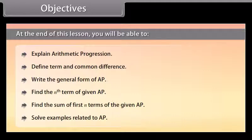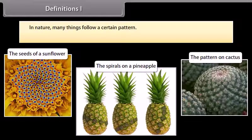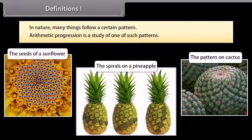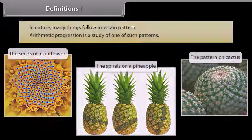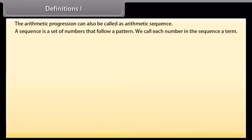In nature, many things follow a certain pattern, such as the seeds of a sunflower, the spirals on a pineapple, the pattern on a cactus, and so on. Arithmetic progression is the study of one such pattern. It can also be called an arithmetic sequence. A sequence is a set of numbers that follow a pattern.